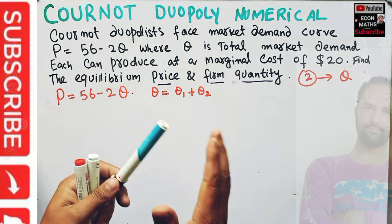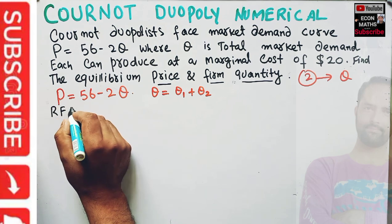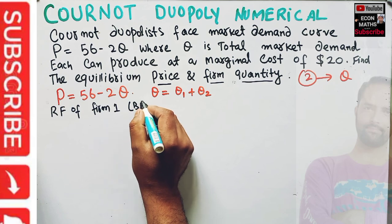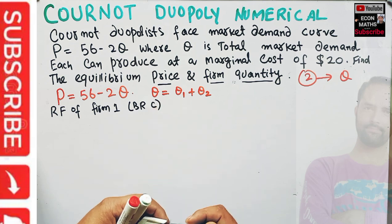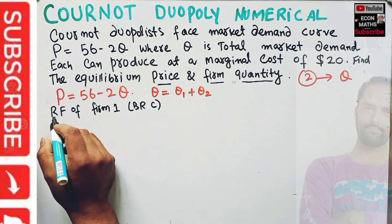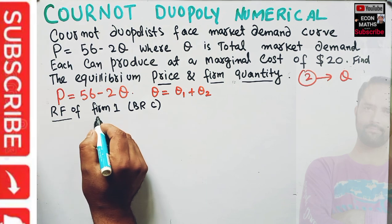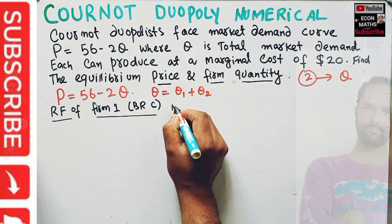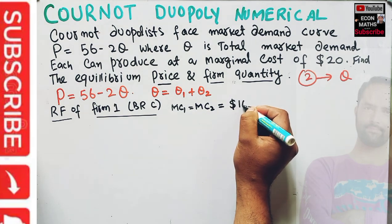We need to find the reaction function of firm one, also called the best response curve. The best response of firm one is the optimal output firm one should produce given the output decided by firm two. We also know that the marginal cost for firm one equals the marginal cost for firm two, which is constant at $20.